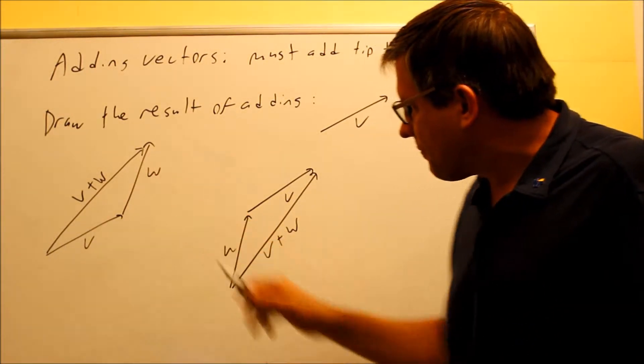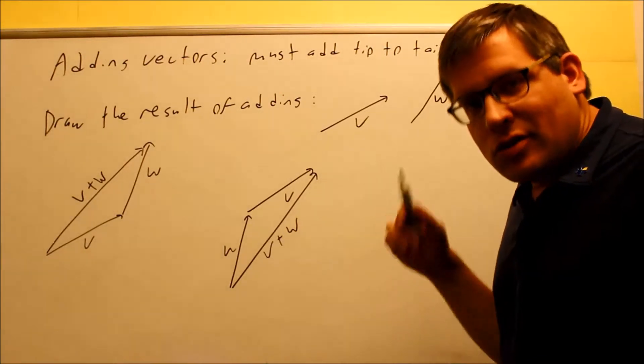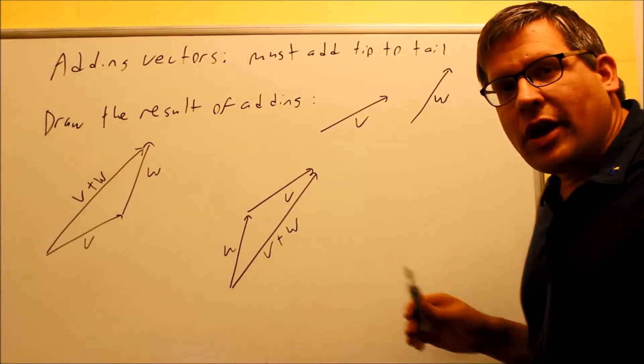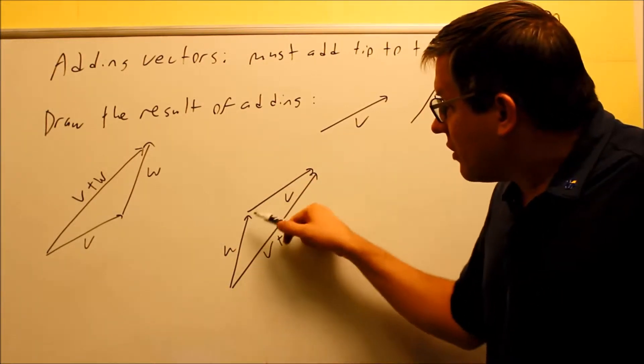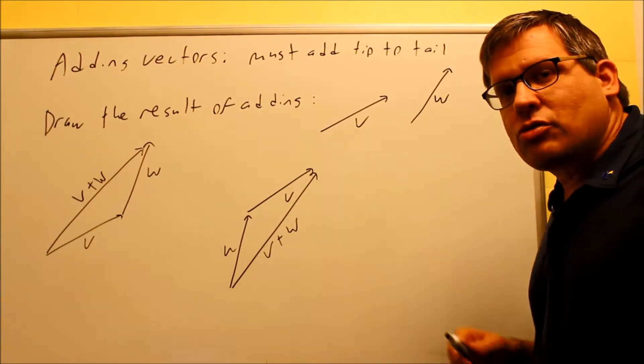I've shown that you can actually go either route. You can either go this way or you can go that way. This way is still okay because I'm still adding the vectors tip to tail. That's the most important thing. It doesn't matter how you orient that. But the main thing is you have to put them tip to tail. Next, we're going to talk about how to subtract vectors.